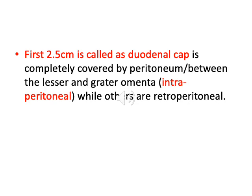The first 2.5 cm of the duodenum is called the duodenal cap. It is completely covered by peritoneum, meaning it is an intraperitoneal structure located between the lesser and greater omentum, while the other parts of the duodenum are retroperitoneal.